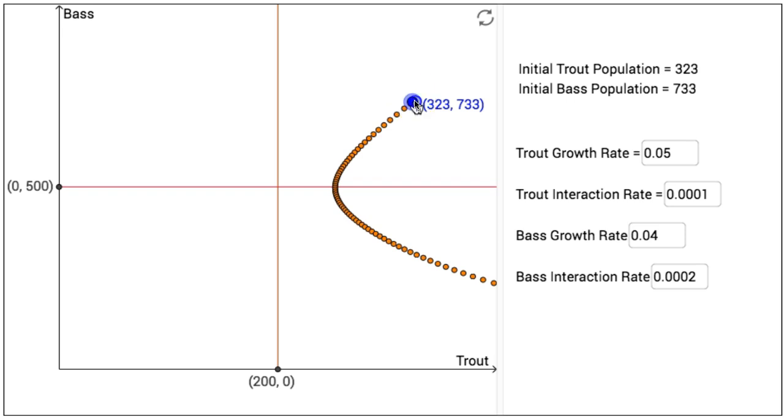If I were to drag this point close to the center of the graph, and as I get closer, I'm going to use my arrow keys on my keyboard to make the point 200, 500. At this population, the system is in equilibrium. So there are 200 trout in the population, there are 500 bass in the population, and as time marches forwards, the populations will not change.